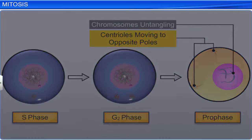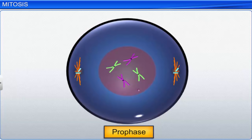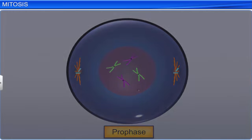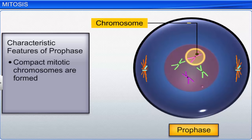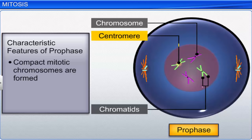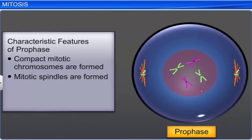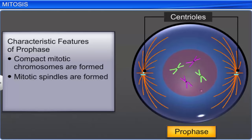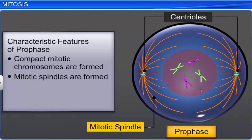Certain characteristic events mark the completion of prophase. Compact mitotic chromosomes are formed due to the condensation of chromosomal material, and each chromosome is made up of two chromatids attached together at the centromere. Moreover, the centrioles that had moved to the opposite ends of the cell initiate the formation of the mitotic spindles, with the help of the microtubules and the proteinaceous constituents of the cell cytoplasm.